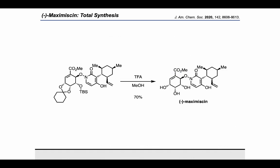Finally, treatment with TFA and methanol allowed a global deprotection to arrive at maximycin. Overall, a very interesting synthesis totaling 10 steps in the longest linear sequence, with some very imaginative and instructive steps.